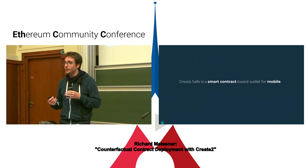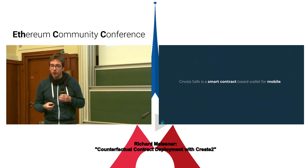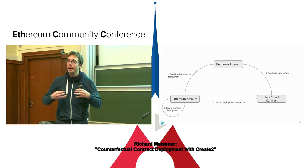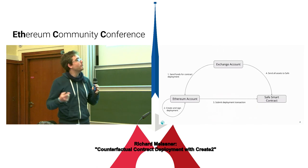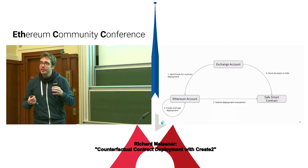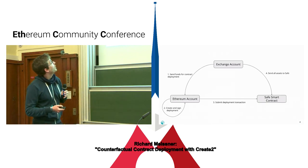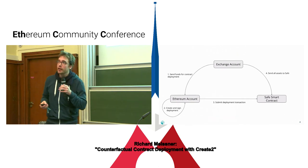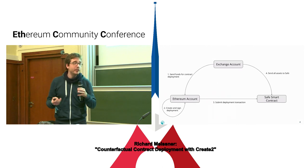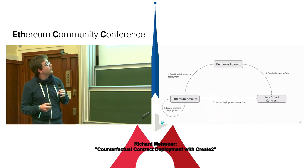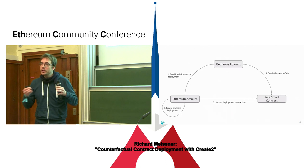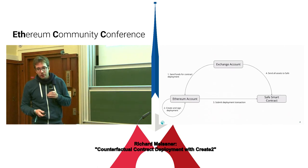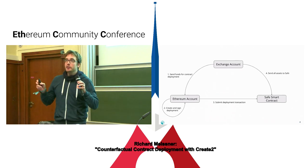Since the Gnosis Safe is smart contract based, we care about how we deploy the smart contract for the user. If you're new to Ethereum and want to deploy a safe contract, you'd go to a centralized exchange, buy some ether, create an Ethereum account, fund it, configure and deploy the creation transaction, and then send remaining funds to the new smart contract. Obviously this is not easy for everyone.